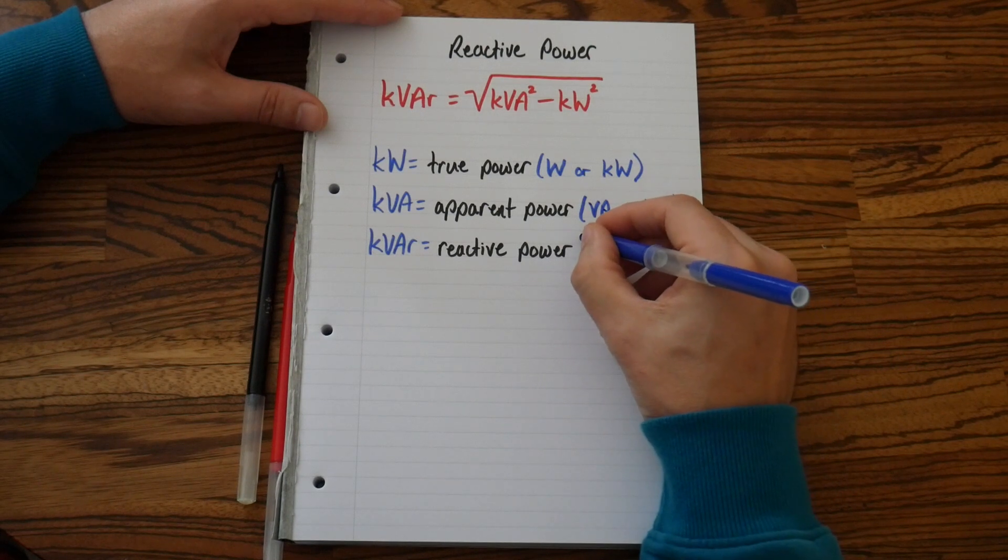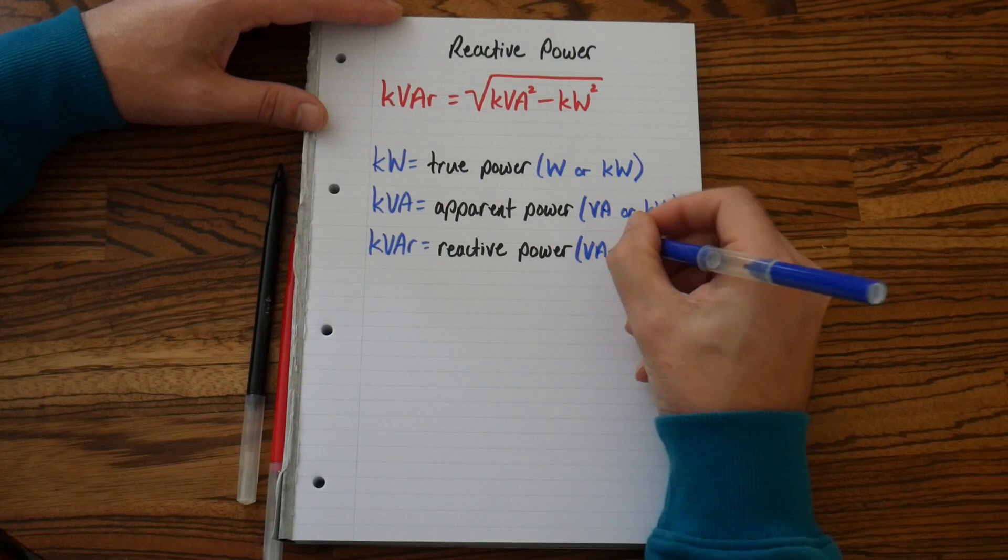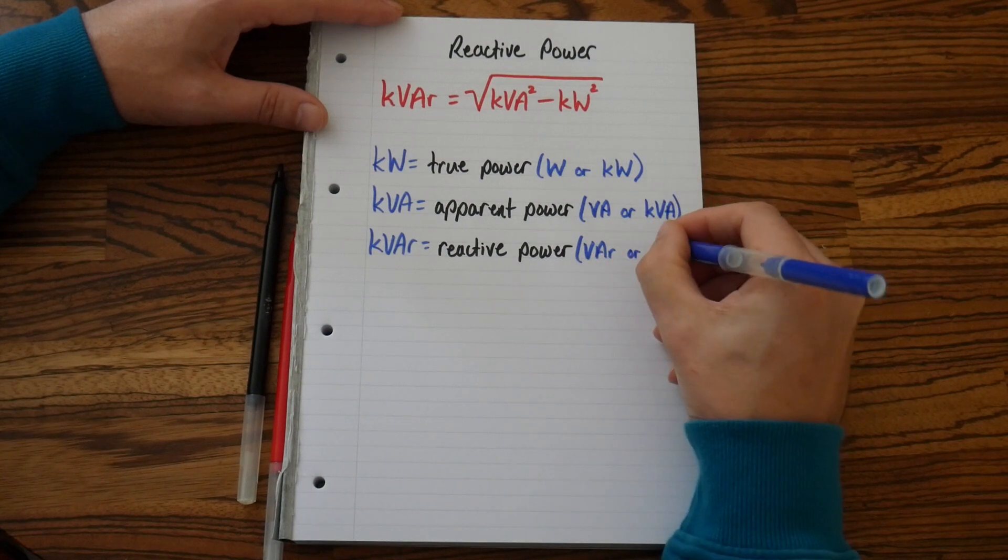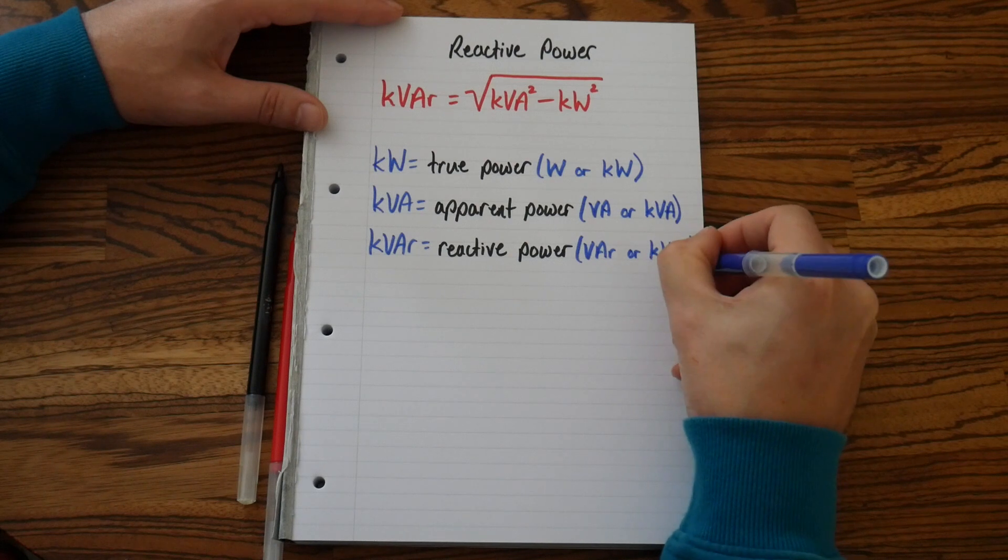Reactive power, you've guessed it, is volt-amperes reactive. Or because it's often a large number, you'll see it written as kVAR.